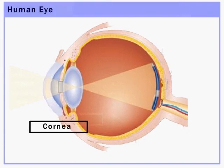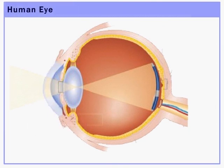This is the cornea. It is a thin membrane through which light enters the eye.